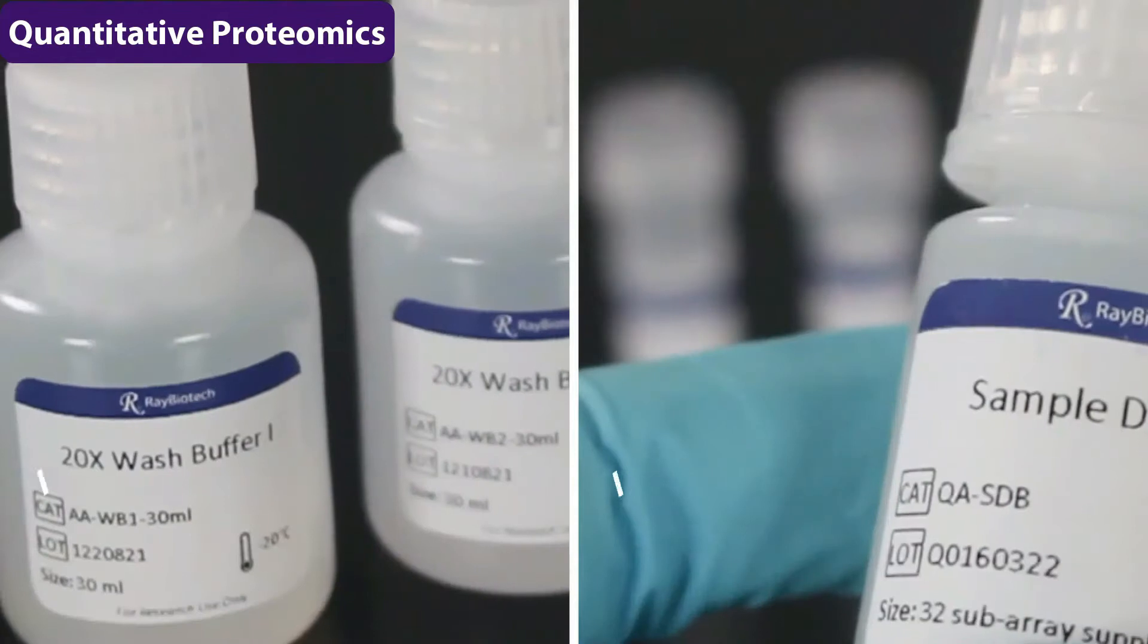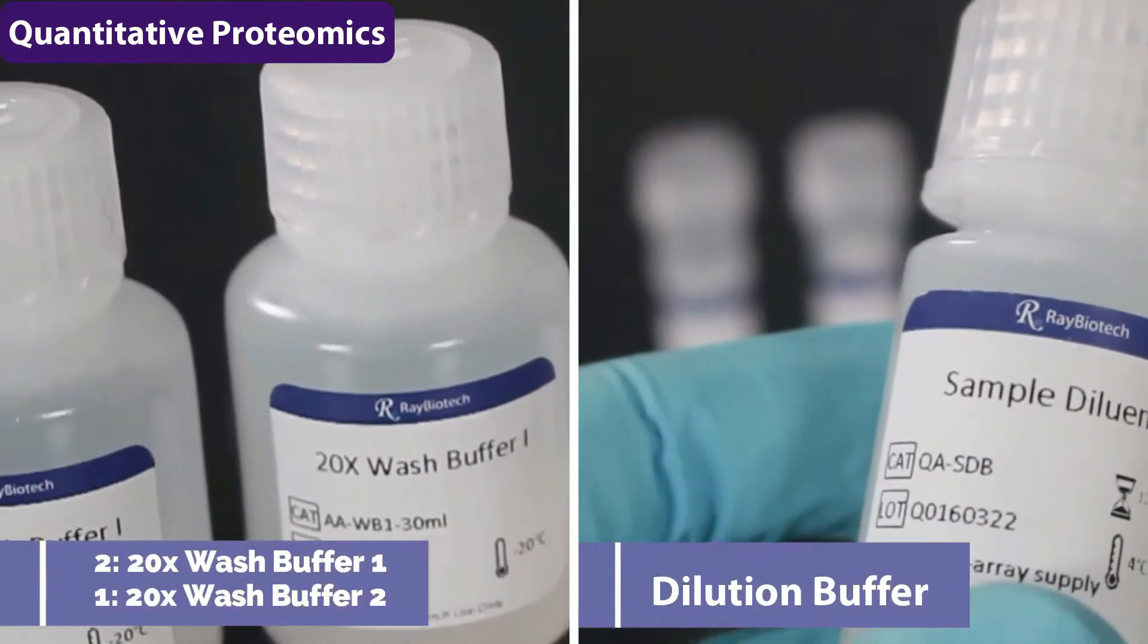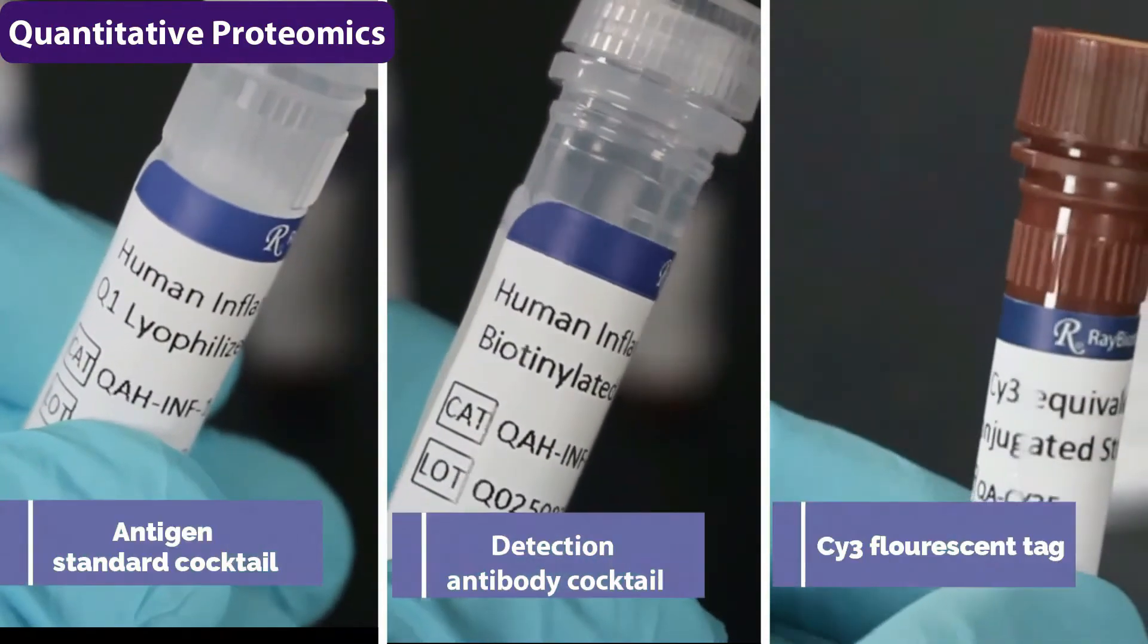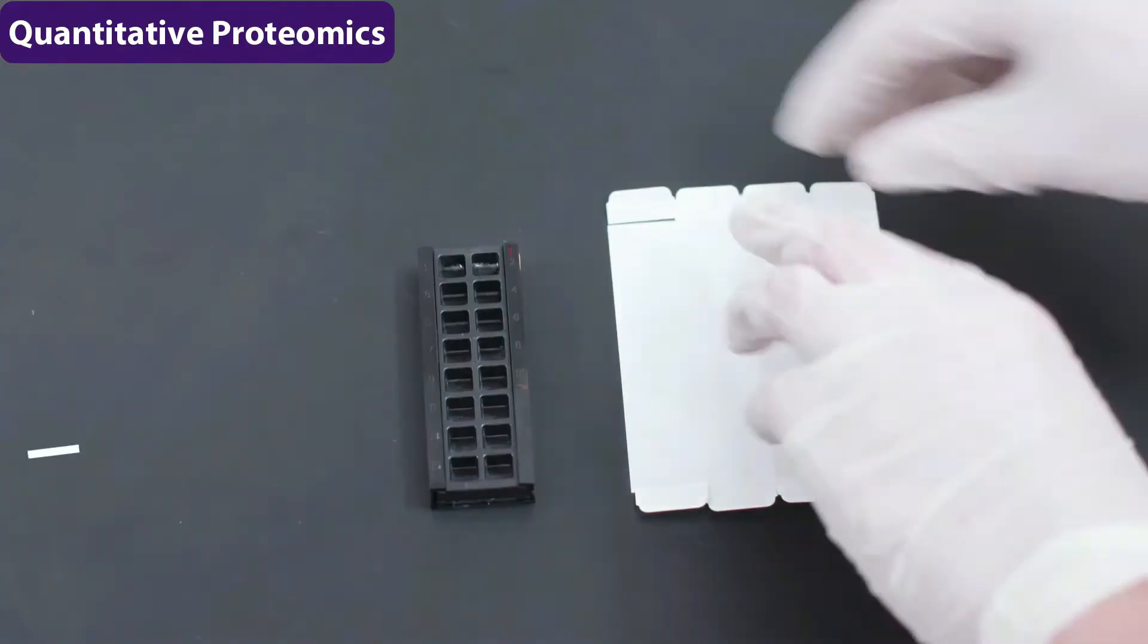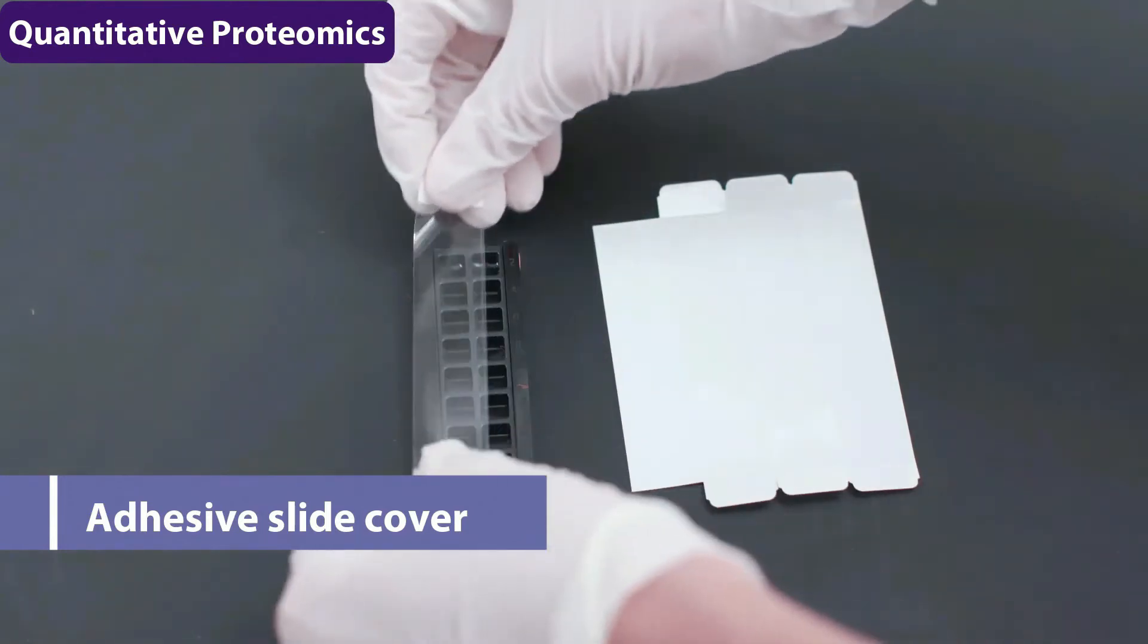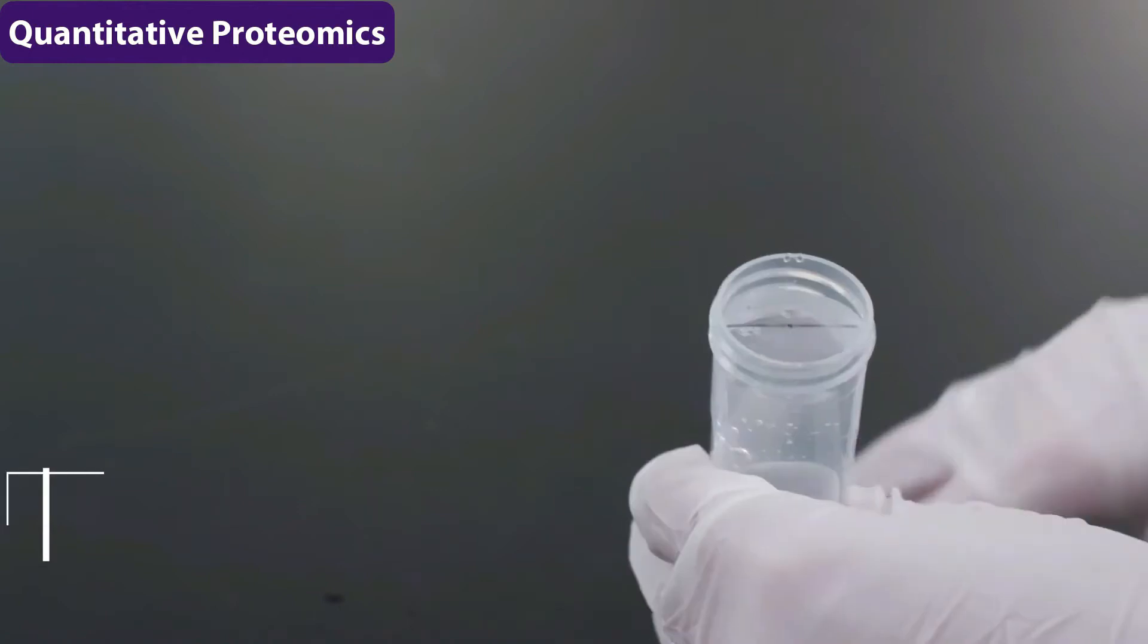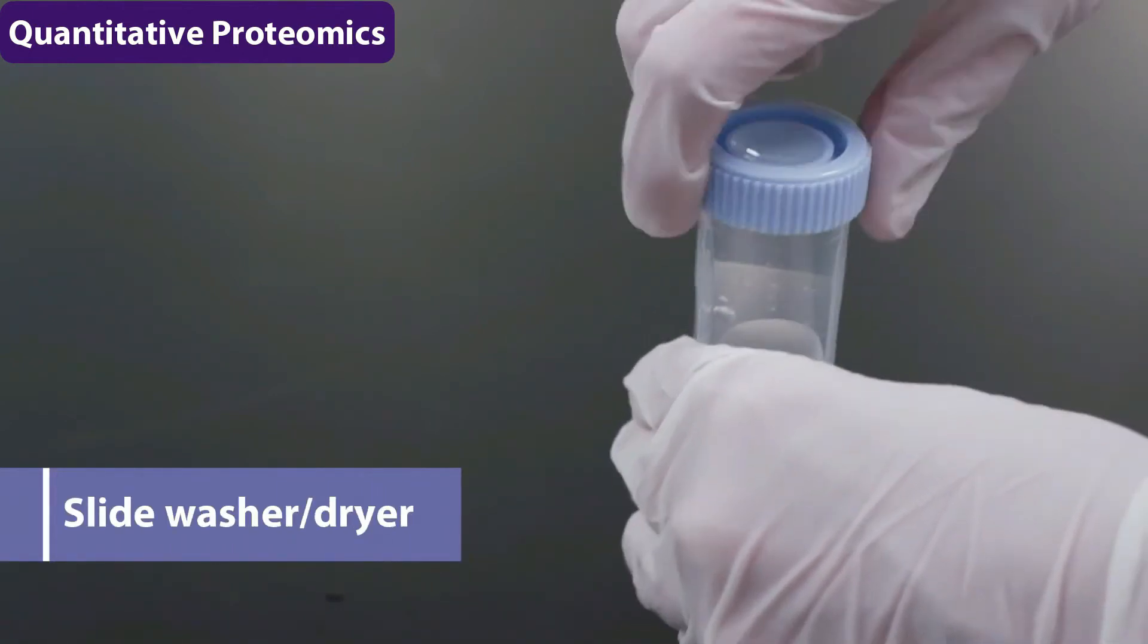The other components that you need are three wash buffers, two wash buffer one and one wash buffer two, in addition to a sample diluent. You also have your standard antigen cocktail, detection antibody cocktail, and your fluorescent tag, which is Cy3. To minimize contamination, we have also included some adhesive slide covers to be used with each incubation. The 50 milliliter conical tube with slide inserts is what we're going to call our slide washer dryer.